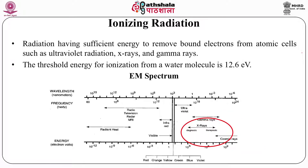What is ionizing radiation? It is radiation having sufficient energy to remove bound electrons from atoms, such as ultraviolet radiation, X-rays, and gamma rays, as well as alpha rays, beta rays, and cosmic rays. The threshold of energy for ionization from a water molecule is about 12.6 electron volts, so any radiation with energy above this is called ionizing radiation. Water is important because more than two-thirds of our body is water, so any ionization there is harmful.